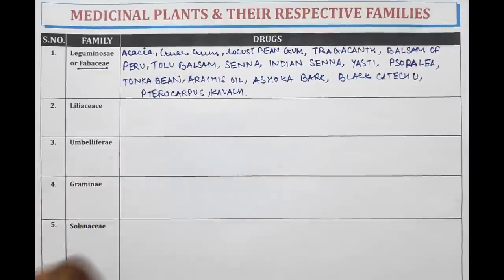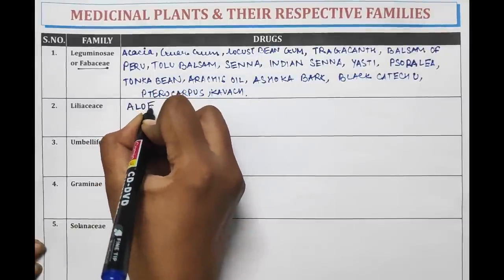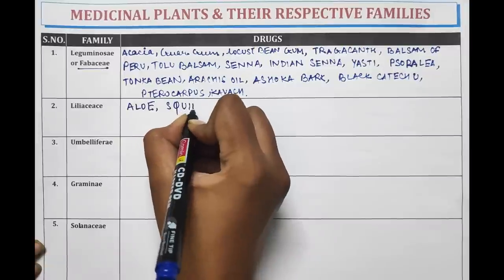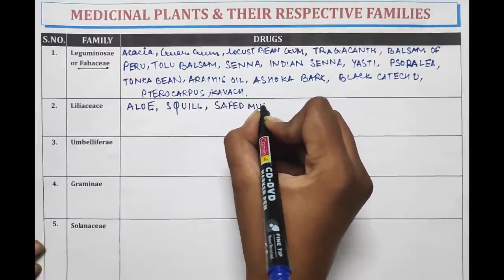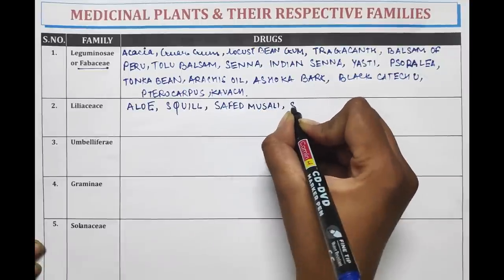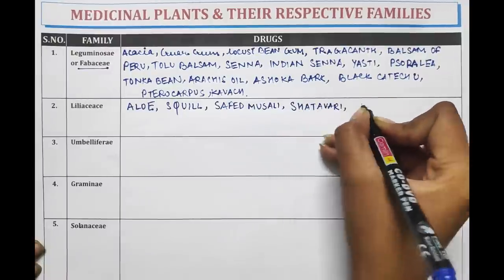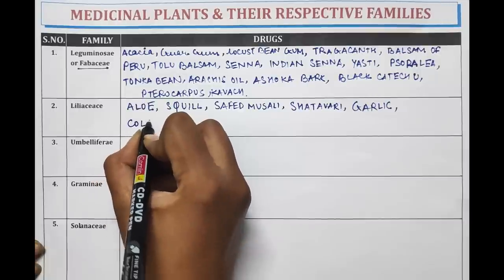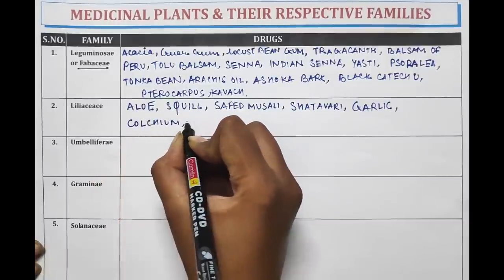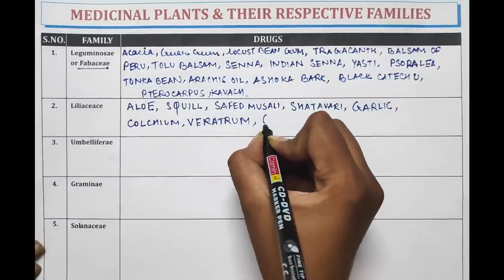Next one is Liliaceae. The drugs belonging to Liliaceae family are Aloe (Aloe Vera), Squill, Safed Musli, Shatavari, Garlic, Colchicum, Veratrum, and Gloriosa.